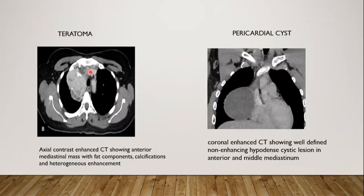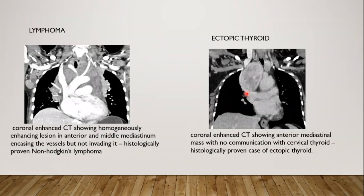Teratomas on post-contrast study show heterogeneous enhancement with areas of fluid-filled cysts, fat, soft tissue component, and calcifications. Pericardial cysts on contrast-enhanced CT appear as a well-defined non-enhancing fluid attenuation lesion next to the pericardium. Lymphomas show a homogeneously enhancing lesion in the anterior and middle mediastinum encasing the vessels but not invading them. Ectopic thyroid in the mediastinum is very rare; here we can see a well-defined heterogeneously enhancing lesion in the anterior mediastinum, which was a histologically proven case of ectopic thyroid.